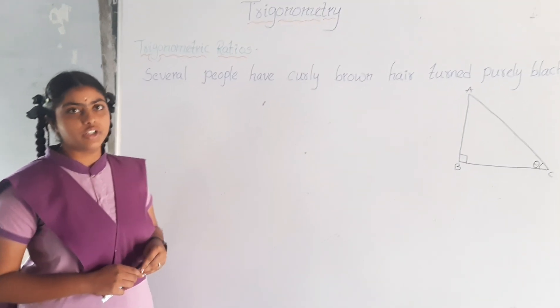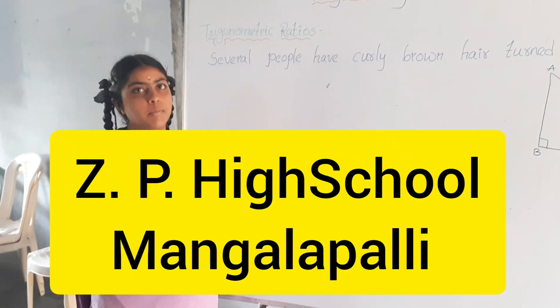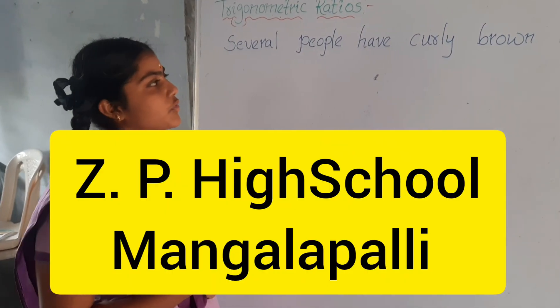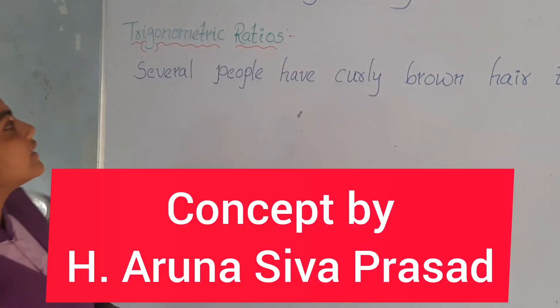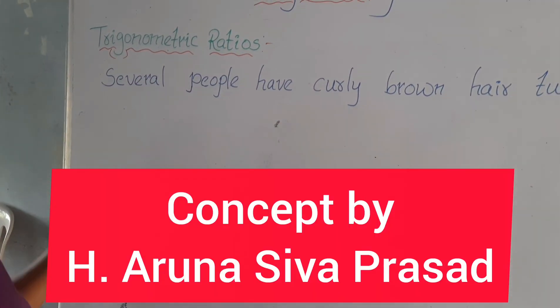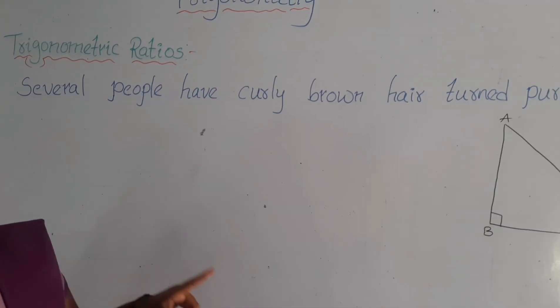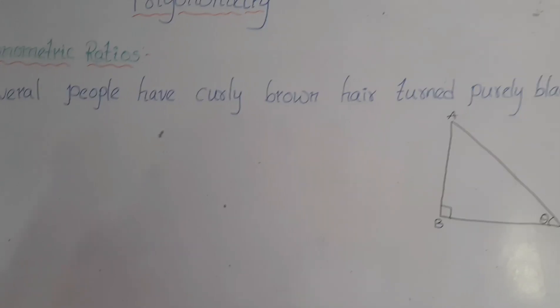Today we are going to learn their formulas. For that, we just have to learn a simple sentence: 'Several people have curly brown hair turned purely black.'